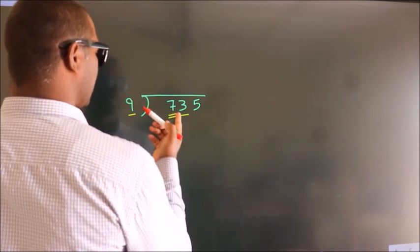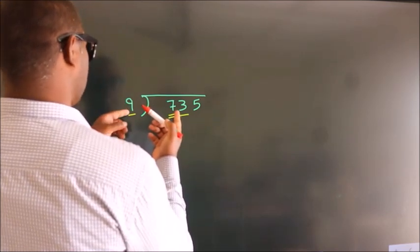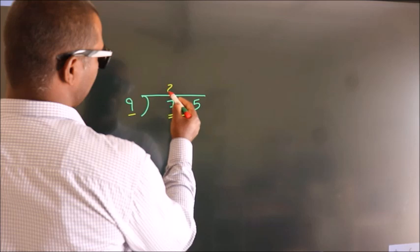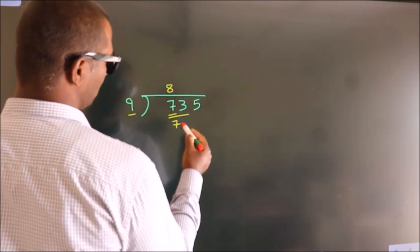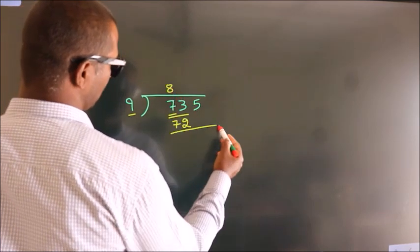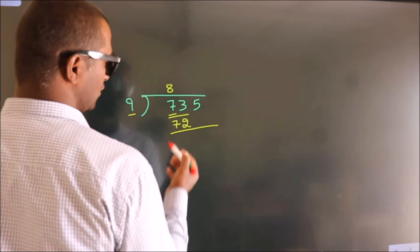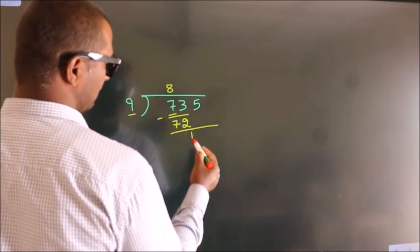A number close to 73 in the 9 table is 9 times 8, which is 72. Now, we subtract and get 1.